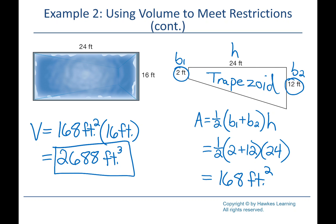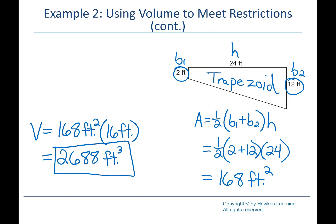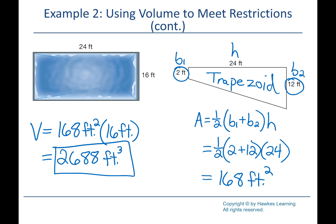The restriction was 4,800 cubic feet of water. Our pool holds 2,688 cubic feet — so yes, the pool is legal. We could even make it bigger if we wanted. That was a little tricky because we had a weird shape. A good strategy is to find the area of one side and then multiply by the remaining dimension.